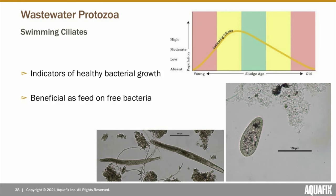Swimming ciliates tend to be found within the young to moderate sludge age when free bacteria levels are decreasing. Swimming ciliates are beneficial to a wastewater system as they feed on free bacteria, which aids in a clear effluent.